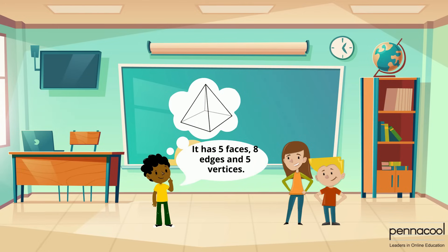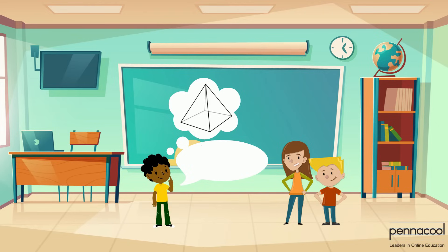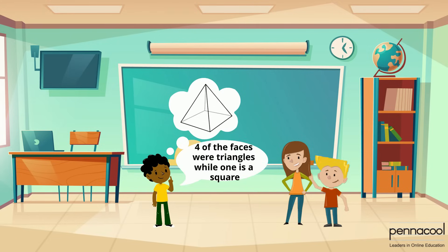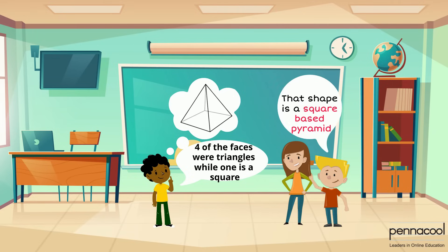Michael says his shape had five faces, eight edges, and five vertices. Manny stops and thinks for a moment and asks if all the faces had the same shape. Michael says four of the faces were triangles, while one was a square. Manny tells him his shape was a square-based pyramid.